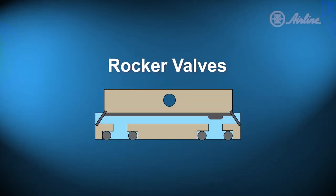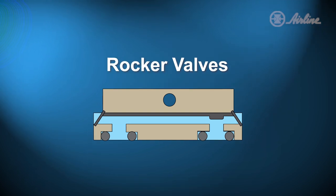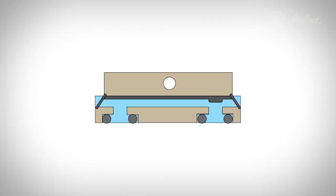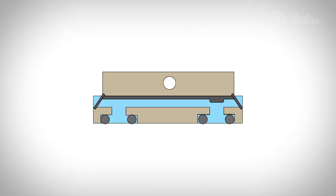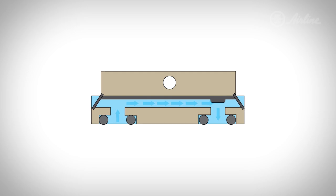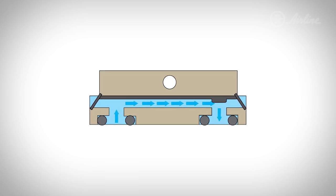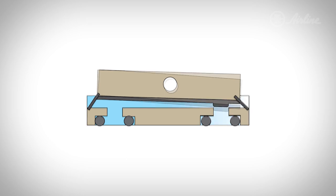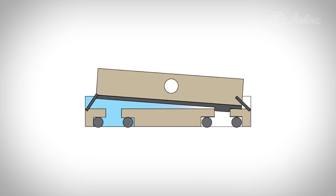First we'll explain rocker valves. A rocker isolation valve is a solenoid-operated device. As the name suggests, it uses a pivoting rocker mechanism to seal the valve seat and isolate the flow path. In this illustration you see a non-activated rocker valve along with the flow path of the medium. As the rocker mechanism is activated it seals the valve seat and isolates the flow path.